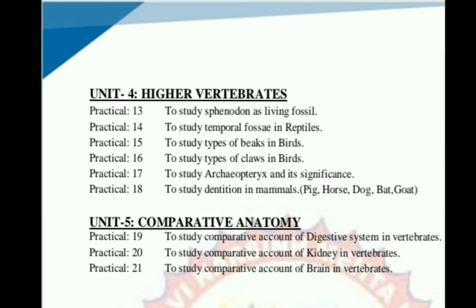Unit number 5 practicals — this unit has a total of 3 practicals. Practical No. 19: study comparative account of digestive system in vertebrates. Practical No. 20: study comparative account of kidney in vertebrates. Practical No. 21: study comparative account of brain in vertebrates.